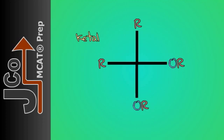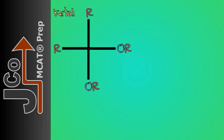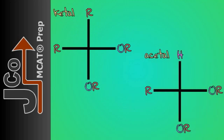Notice that the only difference between the ketal, formed from a ketone, and the acetal, formed from an aldehyde, is that the acetal has a lone hydrogen, while the ketal has an alkyl group.